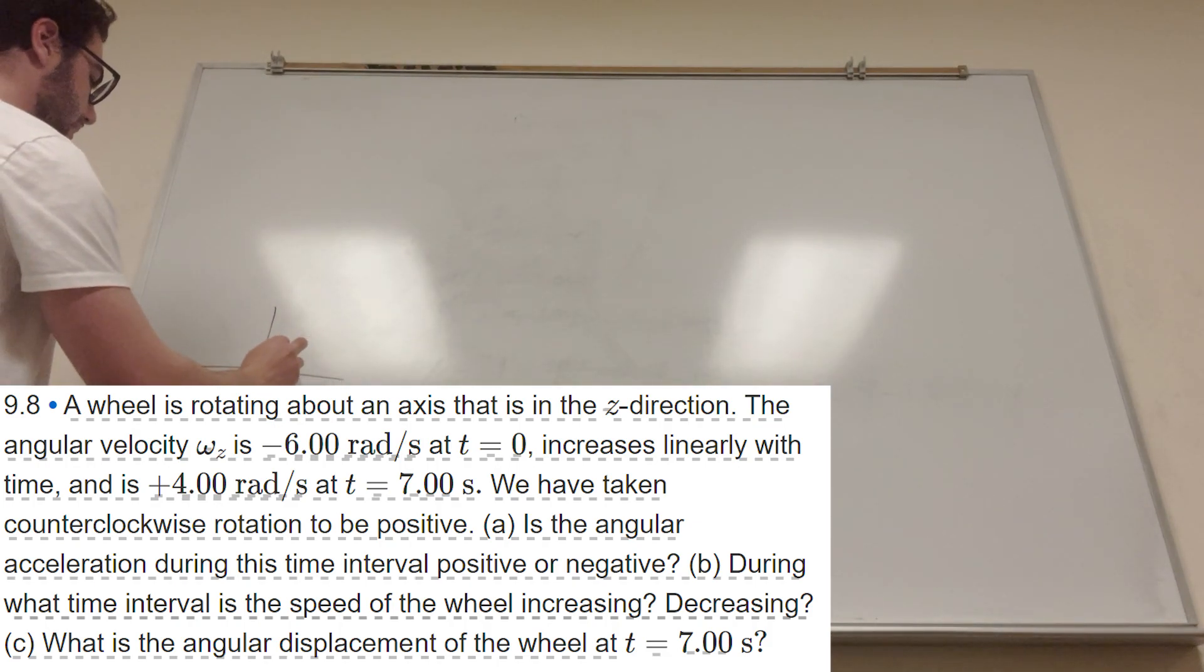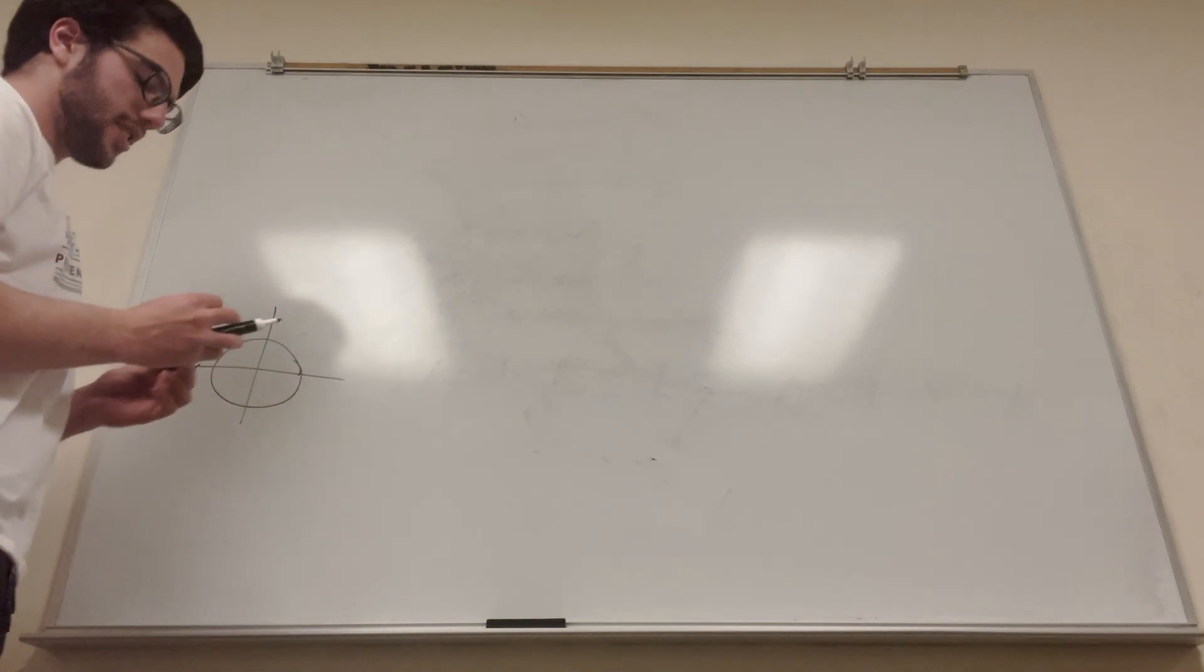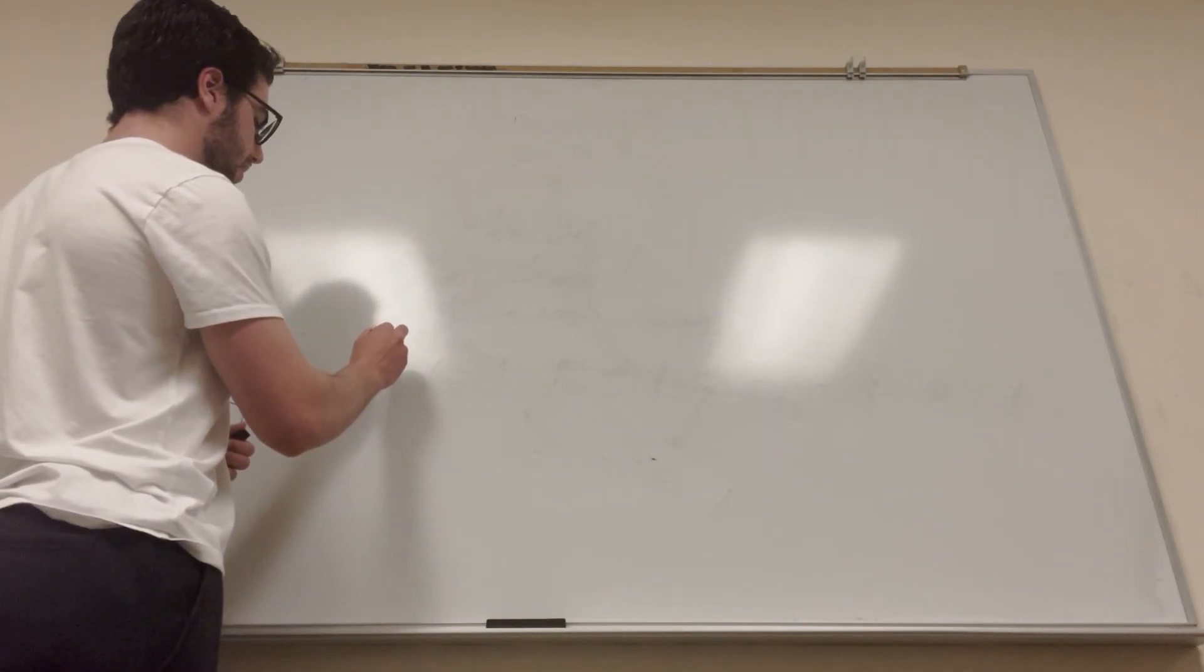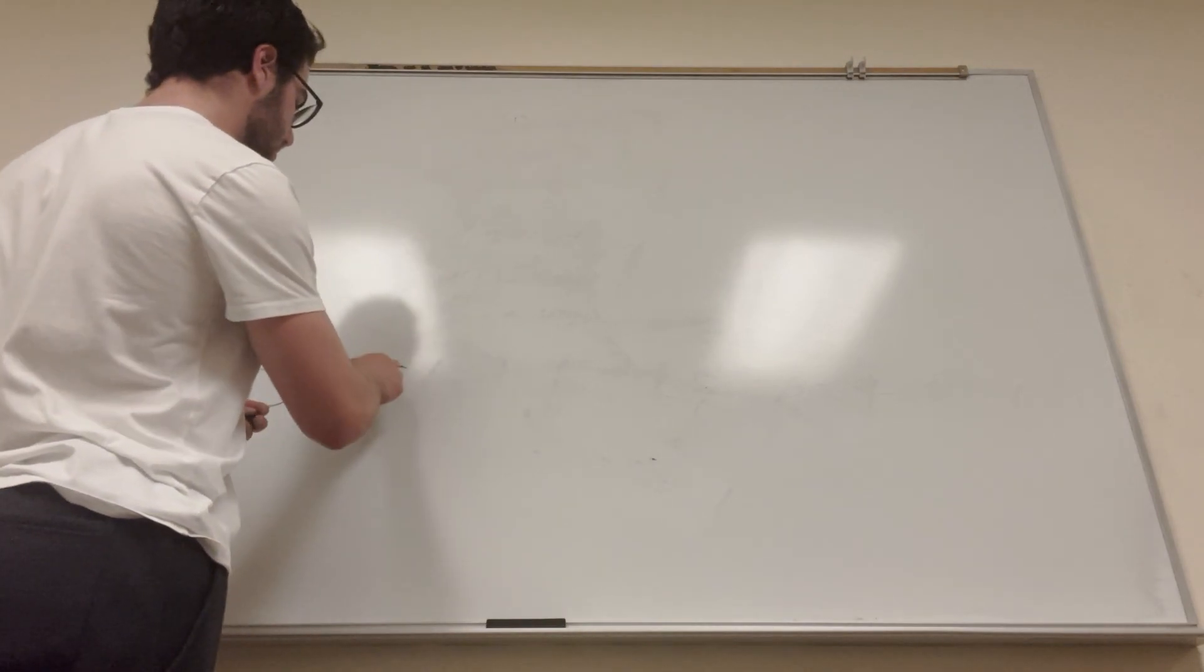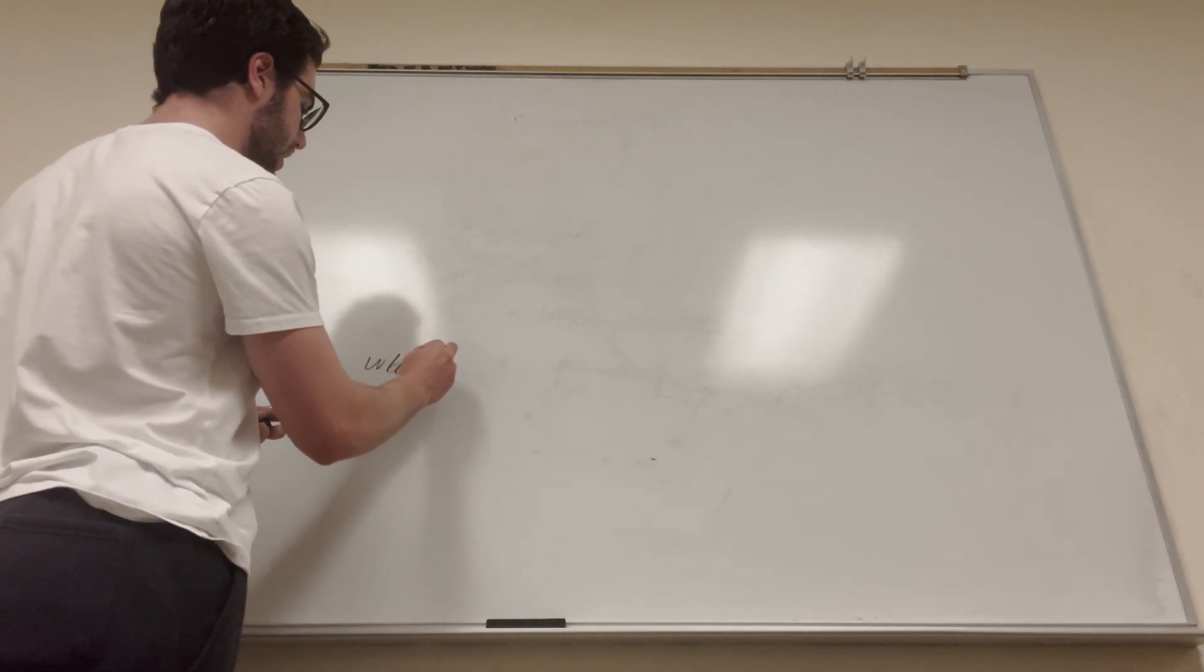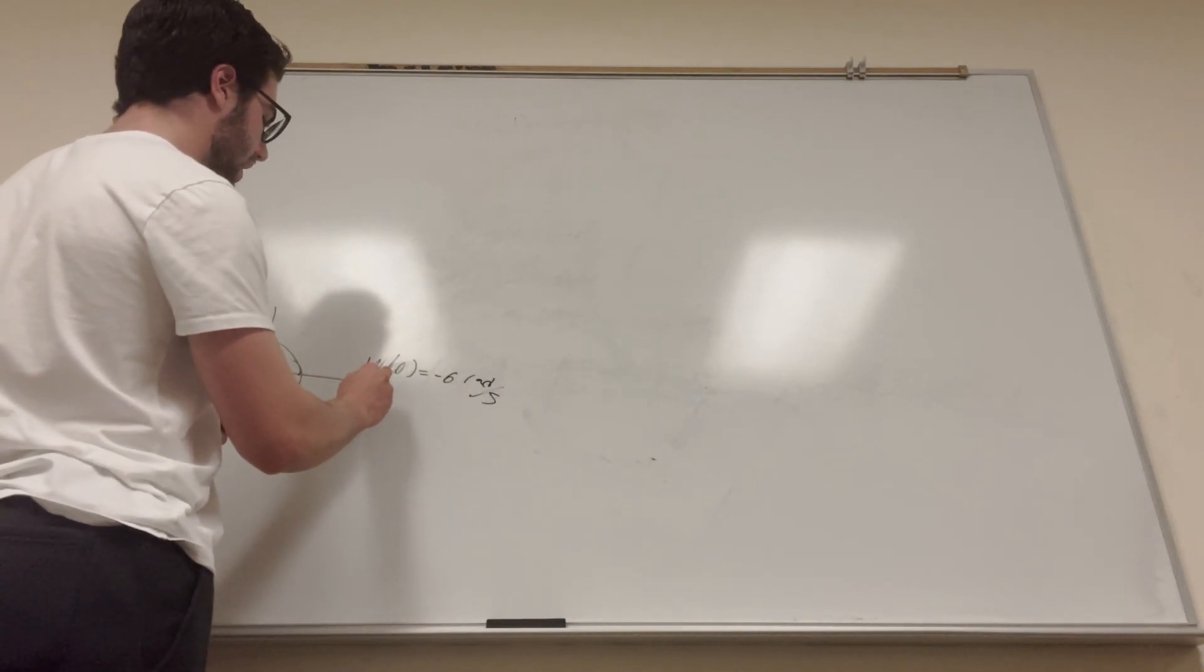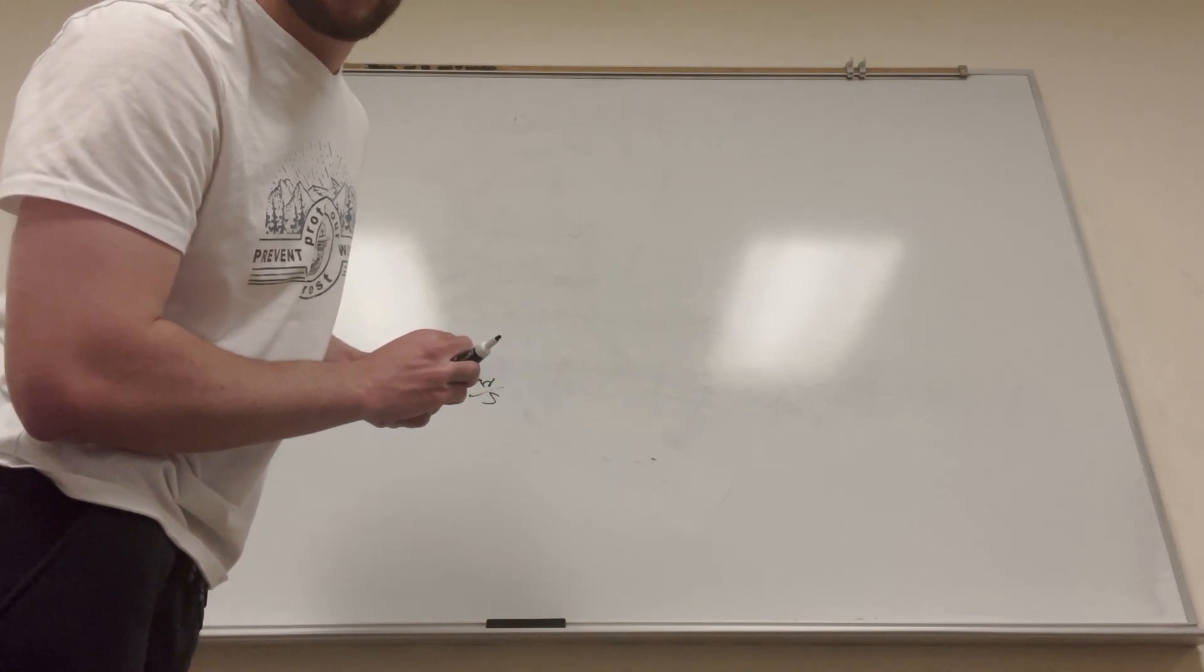So here's what we got. Here's our wheel, rotating this way, I guess. So at the start, w is equal to, let's see, t is equal to zero. So w of zero is equal to negative six radians a second. And then w of seven is equal to four radians a second.